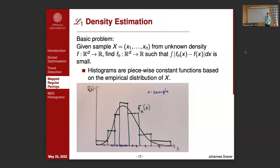The final problem I have looked at is L1 density estimation. The basic problem is that we are given a sample x of size n from some unknown density f from Rd to R. The problem is to find some density estimate fn, also a function from Rd to R, such that the L1 distance between the density estimate and the underlying density is very small. The problem is that we don't know what the underlying density is, so we cannot directly compute this L1 distance — rather, we have to approximate it in some way.